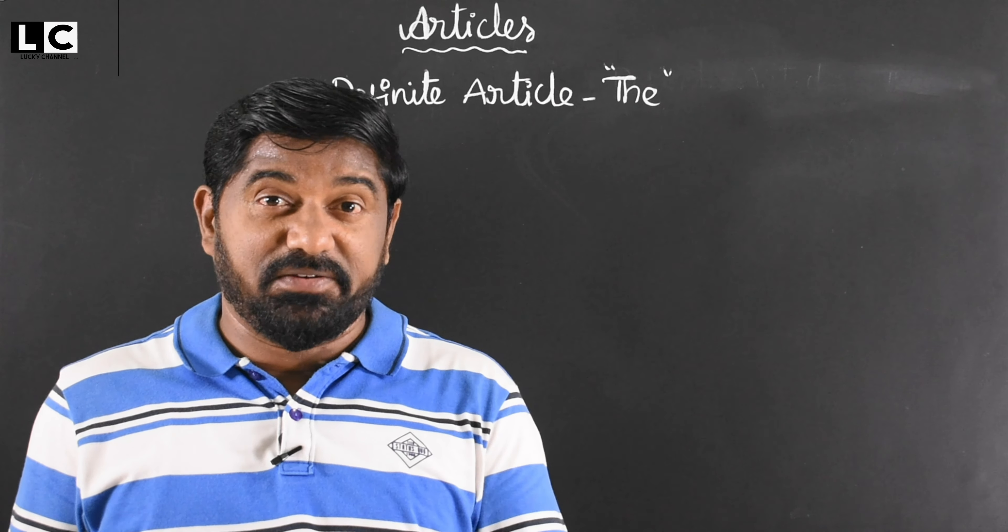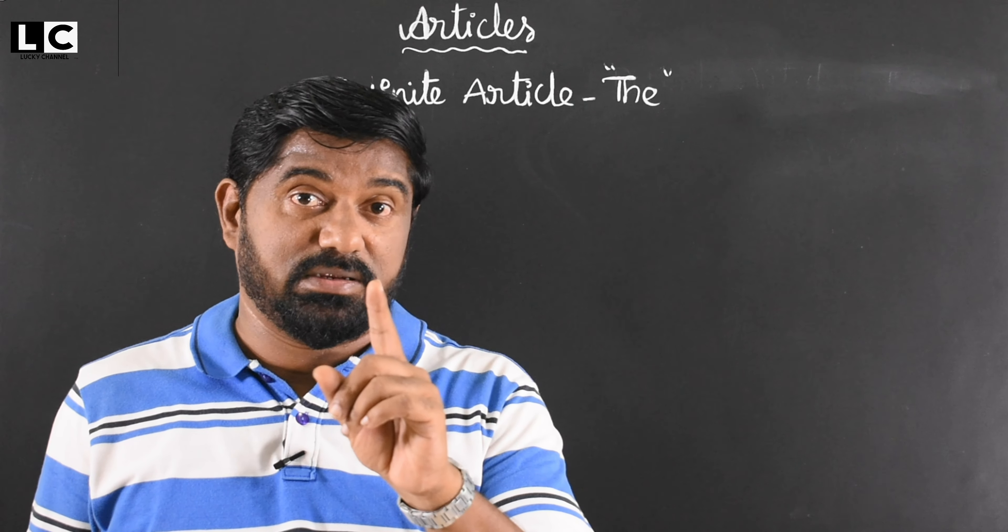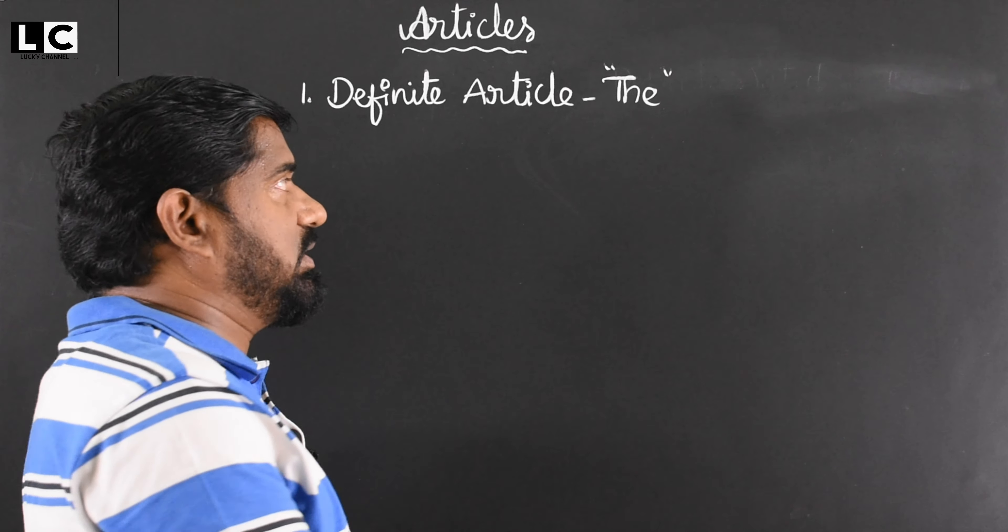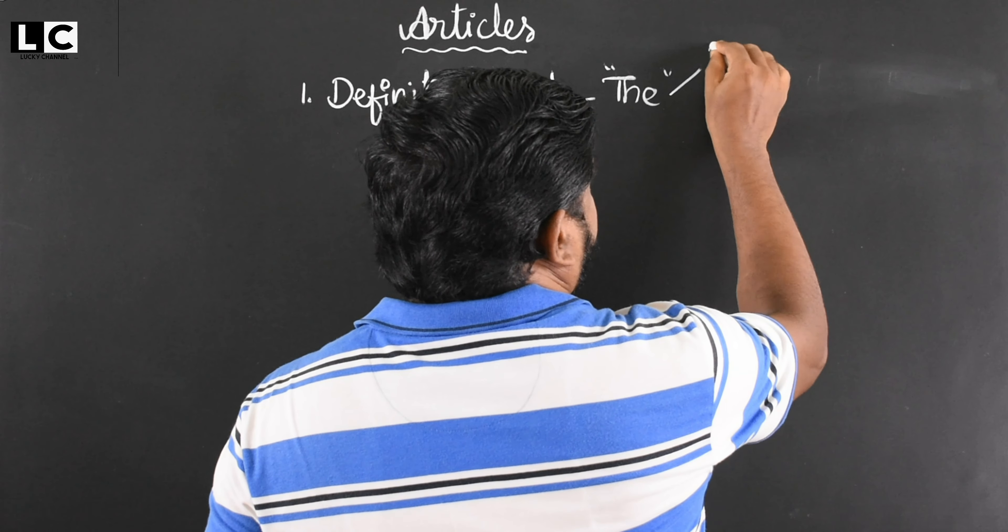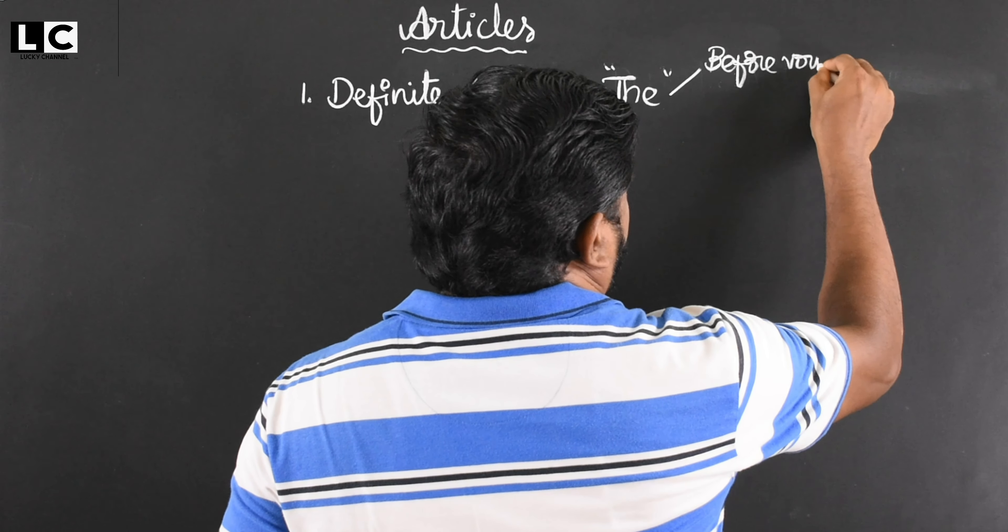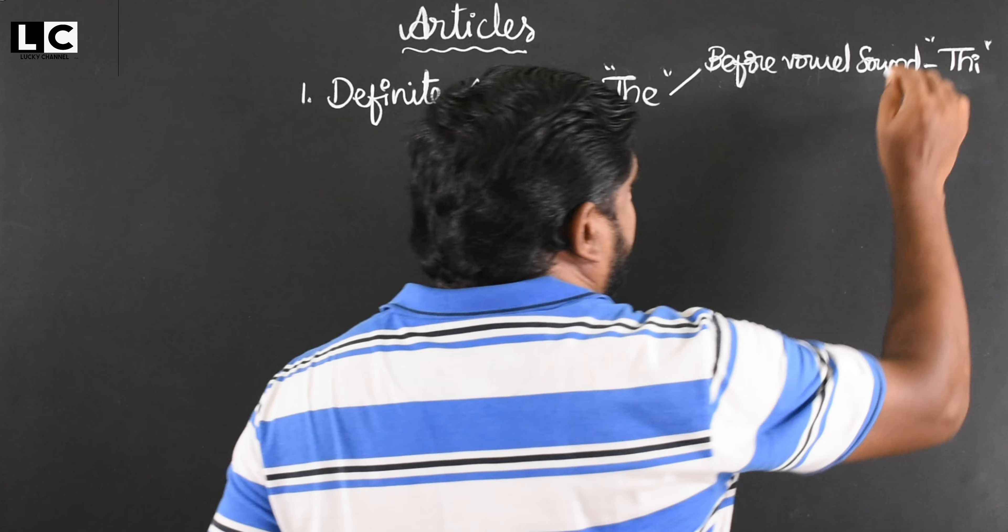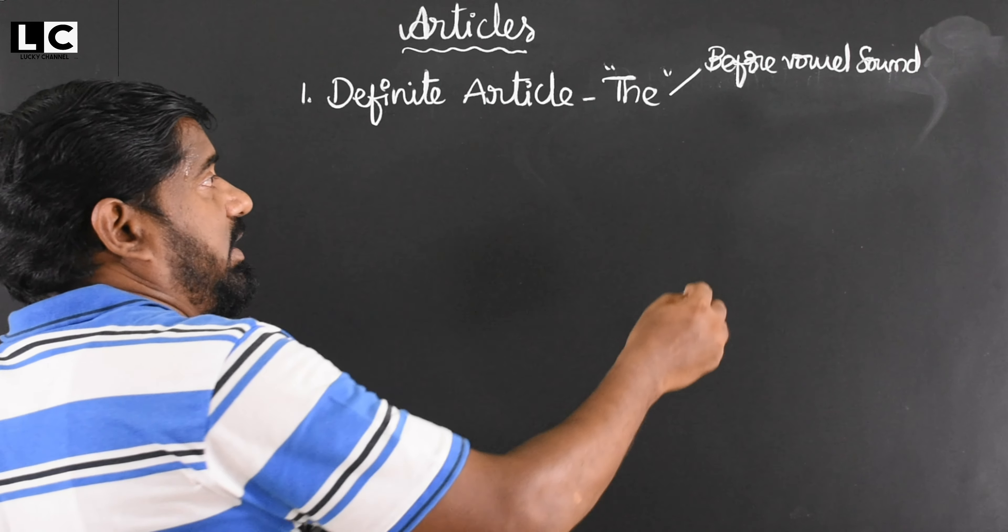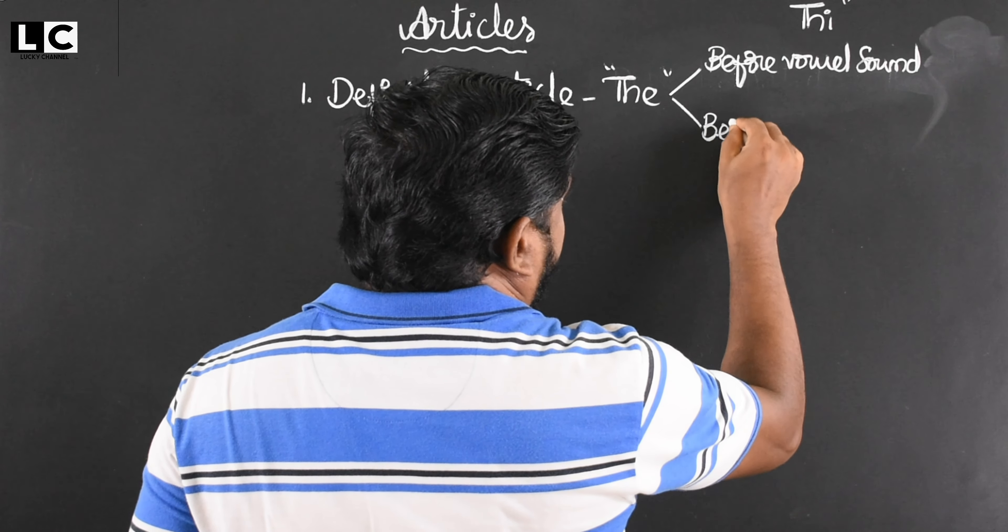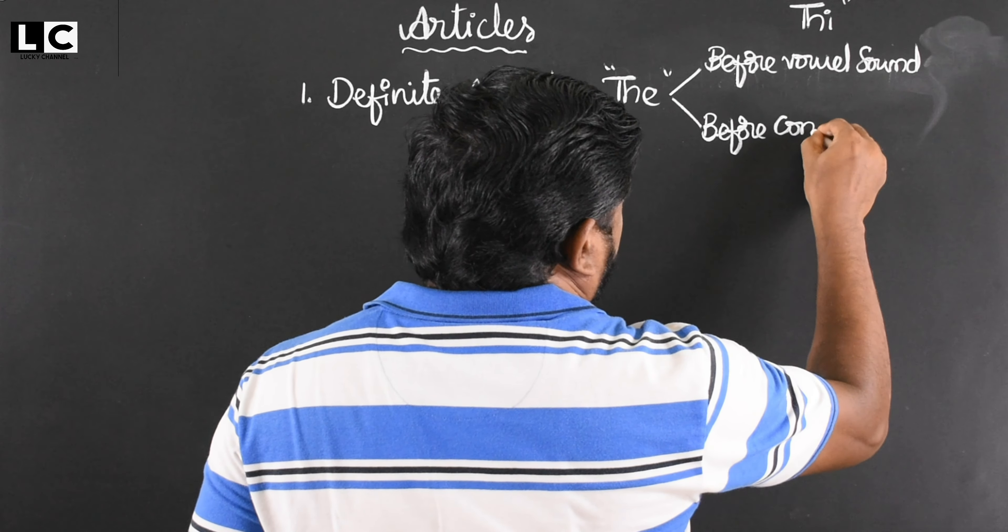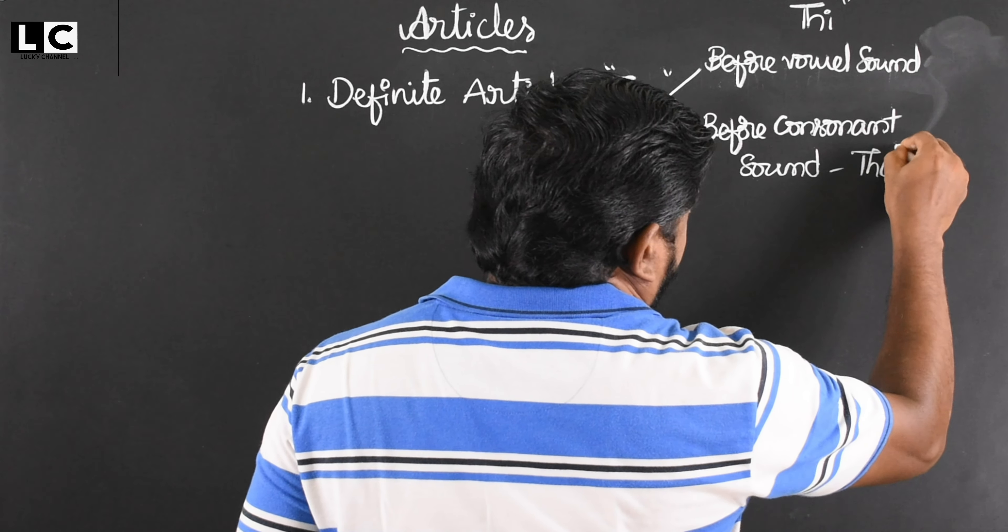For example, definite article - what is this? Some people call it 'the', the remaining people call it 'the'. Which one is the right pronunciation? I will teach you. English pronunciation will be decided by the language rules and regulations along with phonetics. The pronunciation before vowel sound - the. The pronunciation before consonant sound - the.